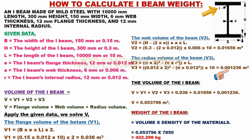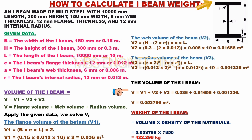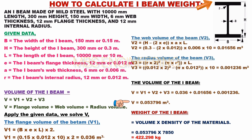Based on the above calculations, the total volume of the I-beam: V = V1 + V2 + V3 = 0.036 + 0.01656 + 0.001236 = 0.053796 cubic meters. The volume of the I-beam is 0.053796 cubic meters.